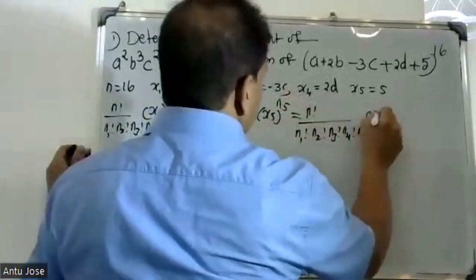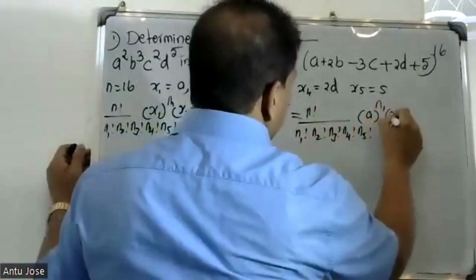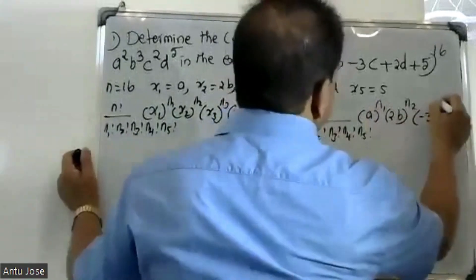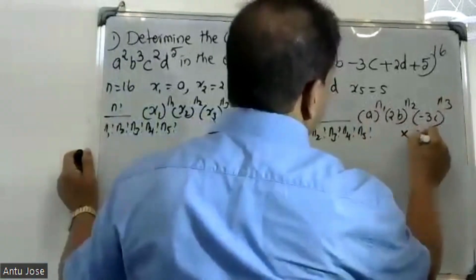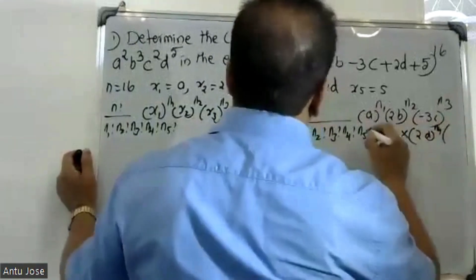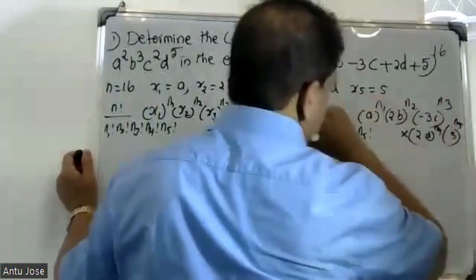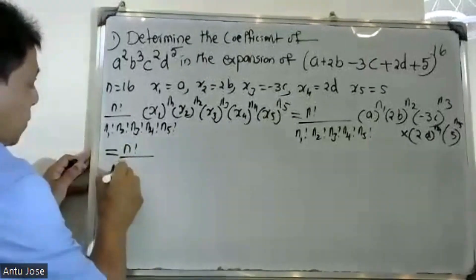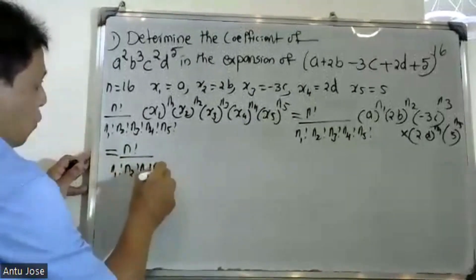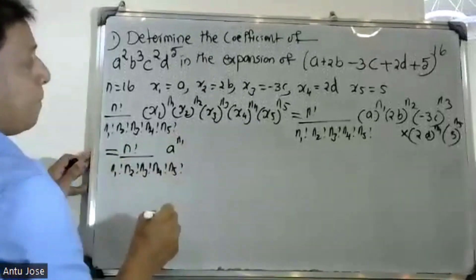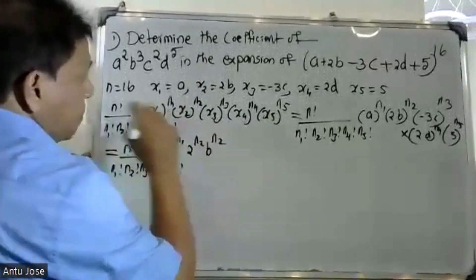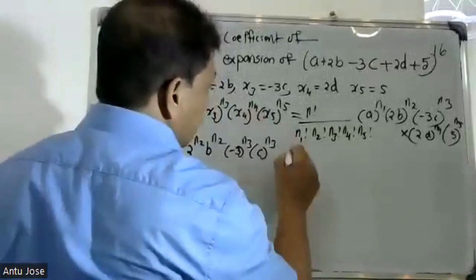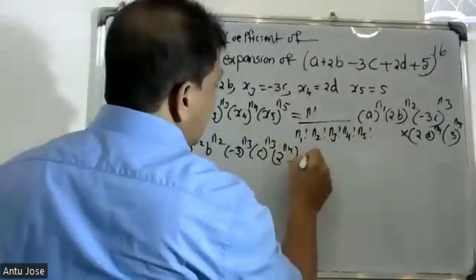Replacing x1 with a raised to n1, x2 with 2b raised to n2, x3 with minus 3c raised to n3, x4 with 2d raised to n4, and x5 as the fifth term. So we have n factorial divided by n1 factorial n2 factorial n3 factorial n4 factorial n5 factorial, then 2 raised to n2 into b raised to n2, 2 raised to n4 into d raised to n4.